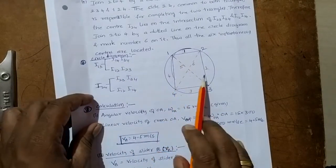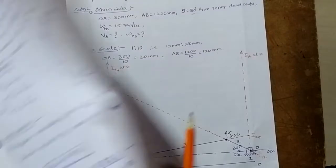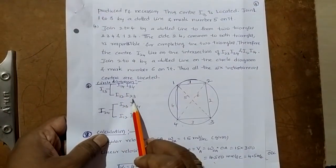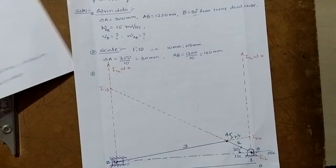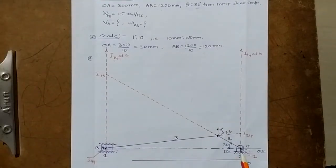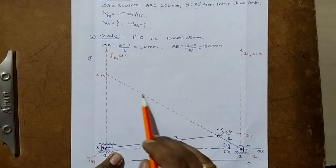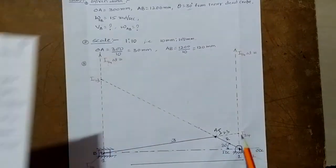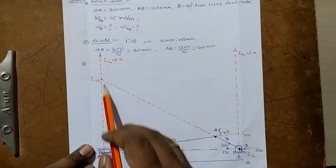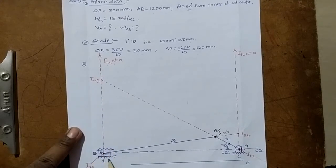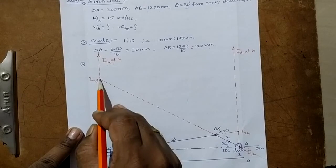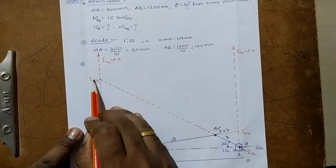To locate I13: I12 is here and I23 is here. Extend both sides of the line through I12 and I23. Then one more line through I14 and I34. By extending these lines, we get the intersection point — this point is I13.